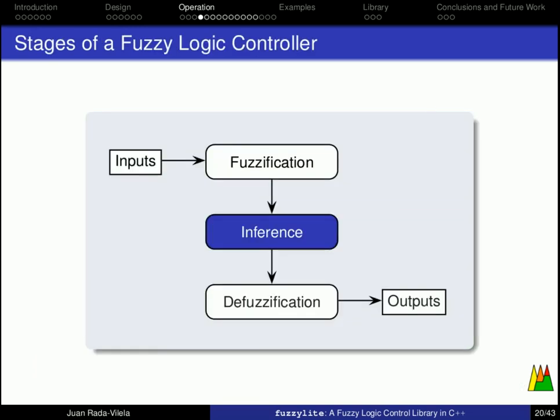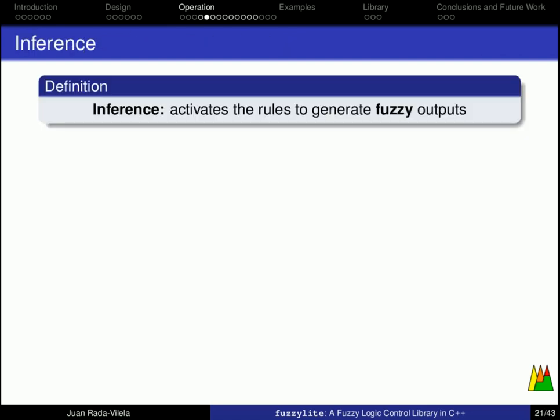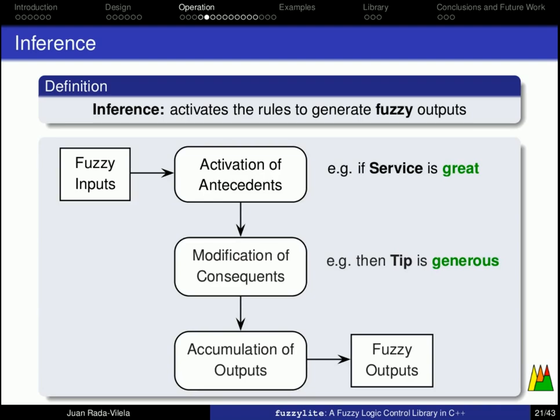The next step is inference, which activates the rules to generate fuzzy outputs. So, having the fuzzy inputs from the previous stage, we work first on activating the antecedents, then we modify the consequence of each rule, and finally, we accumulate the whole thing together to obtain our fuzzy outputs.